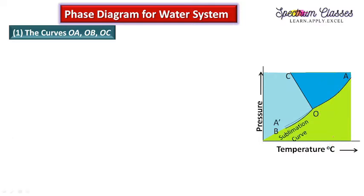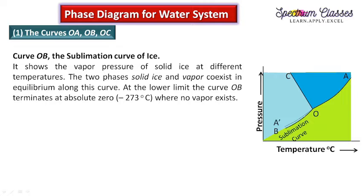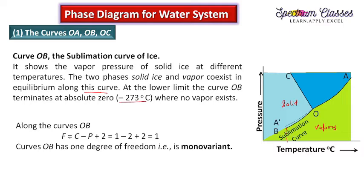The next curve is OB, the sublimation curve, where solid and vapor phases coexist. It shows the vapor pressure of solid ice at different temperatures. The two phases — solid ice and vapor — coexist in equilibrium along this curve. At the lower limit, the curve OB terminates at absolute zero (−273°C), where no vapors exist. Applying F = C − P + 2 gives F = 1, so this is also monovariant.